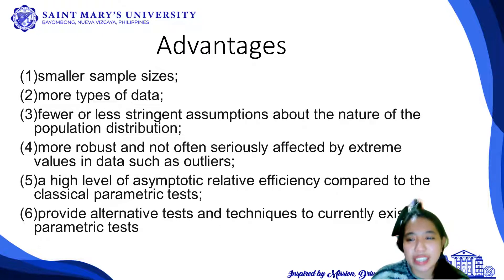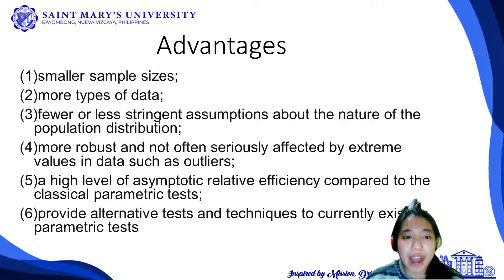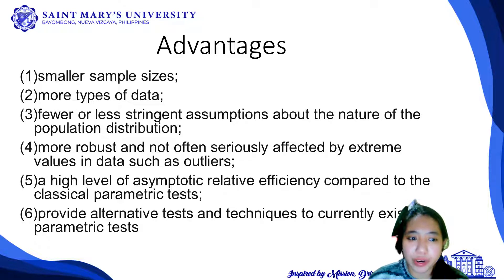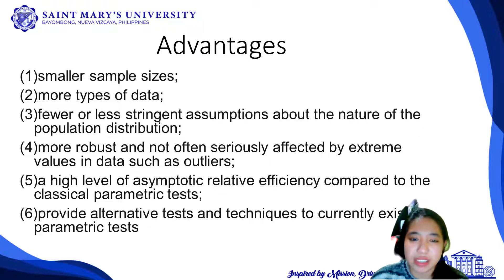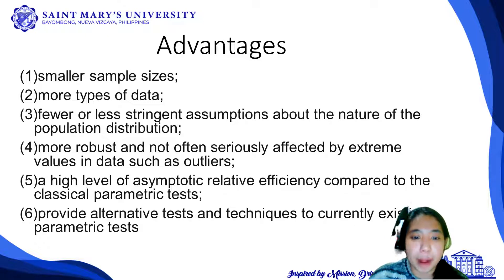Unlike parametric tests, in cases where we encounter outliers or violations, we tend to use non-parametric tests. Non-parametric tests also have a higher level of asymptotic relative efficiency compared to classical parametric tests, and they provide alternative tests and techniques to currently existing parametric tests. So whenever we are dealing with data that does not satisfy the assumptions of a parametric test, we can still answer the research problem because we have non-parametric tests as alternative tests.